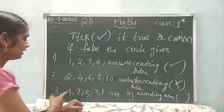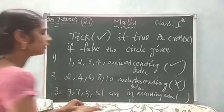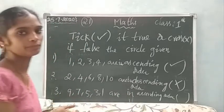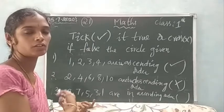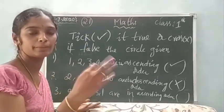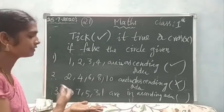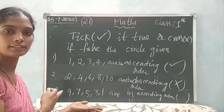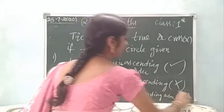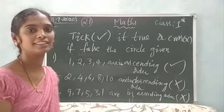And finally, 9, 7, 5, 3, 1 are in ascending order — ascending order, children? No, because the series starts with the higher number going to a smaller number, so this is descending order. So this is also a false statement, so I can put a cross mark.